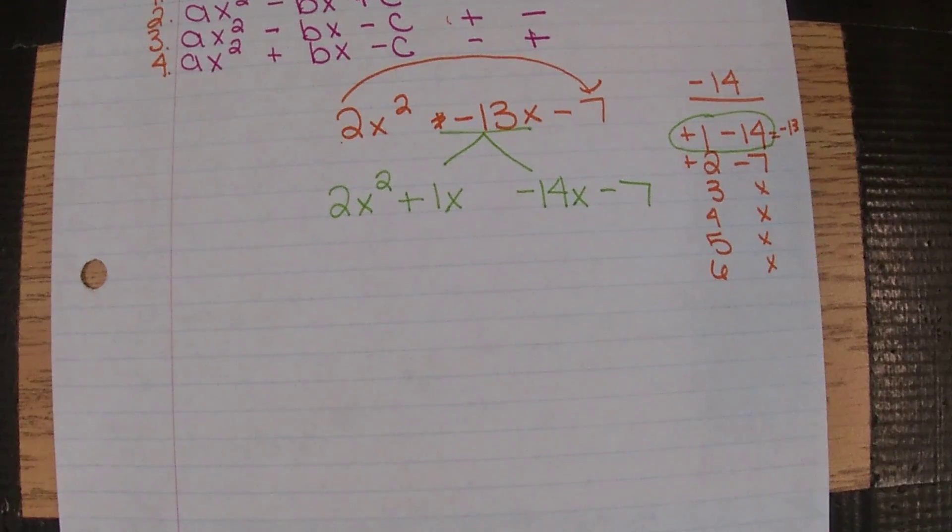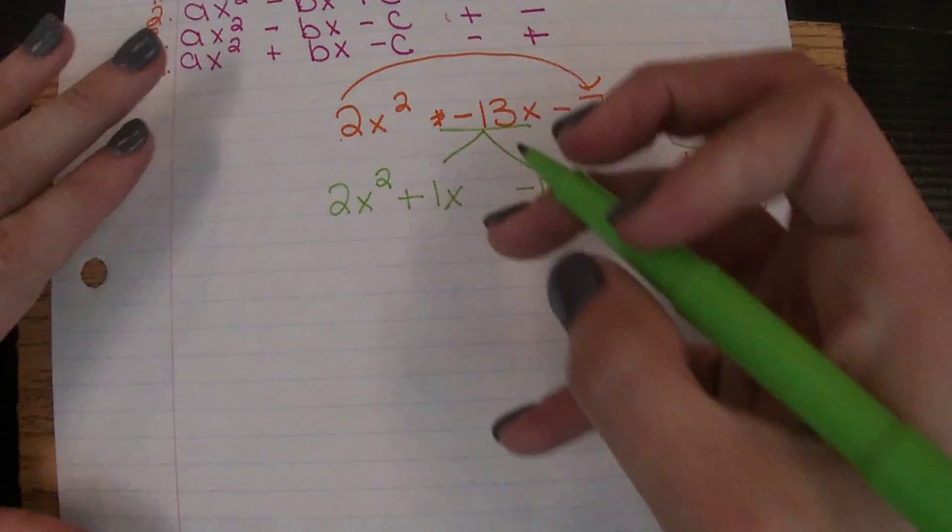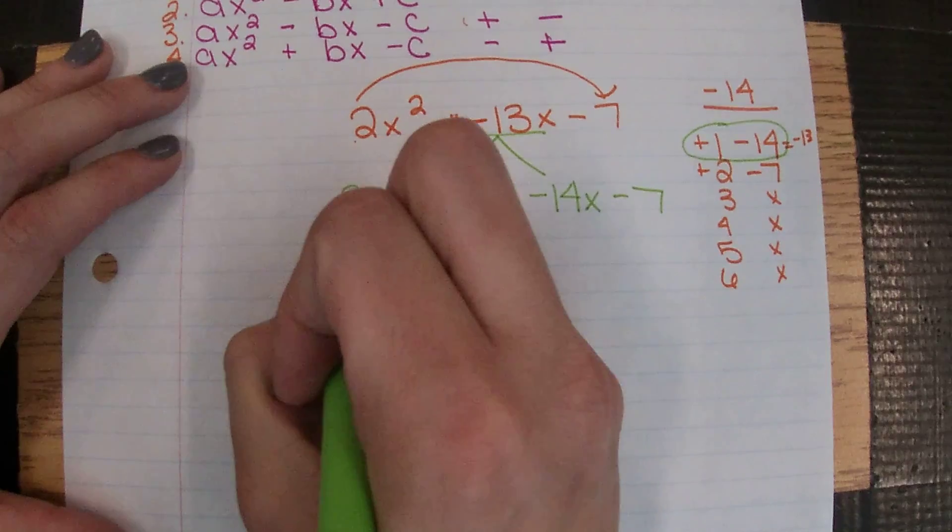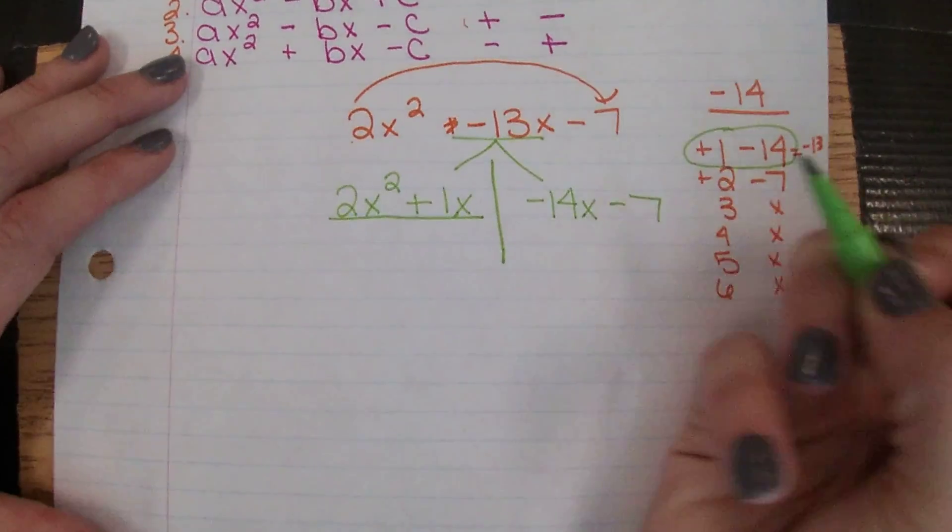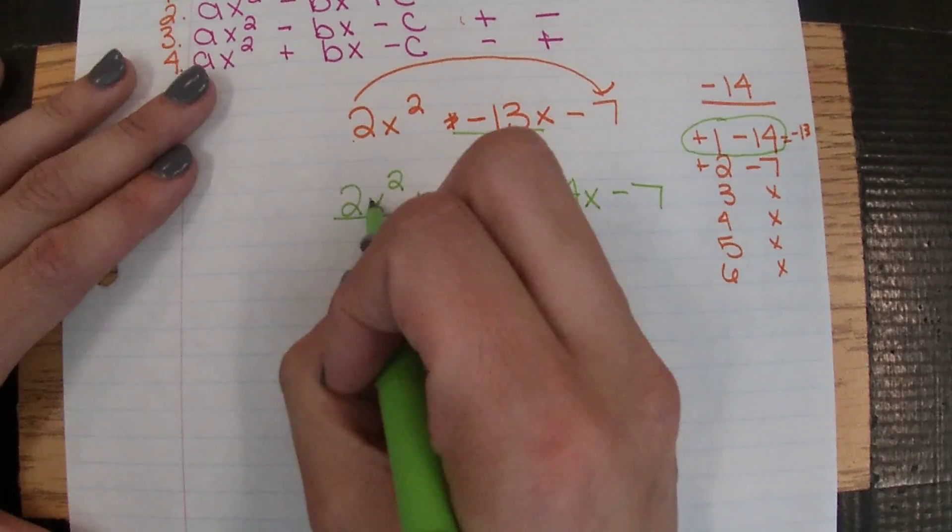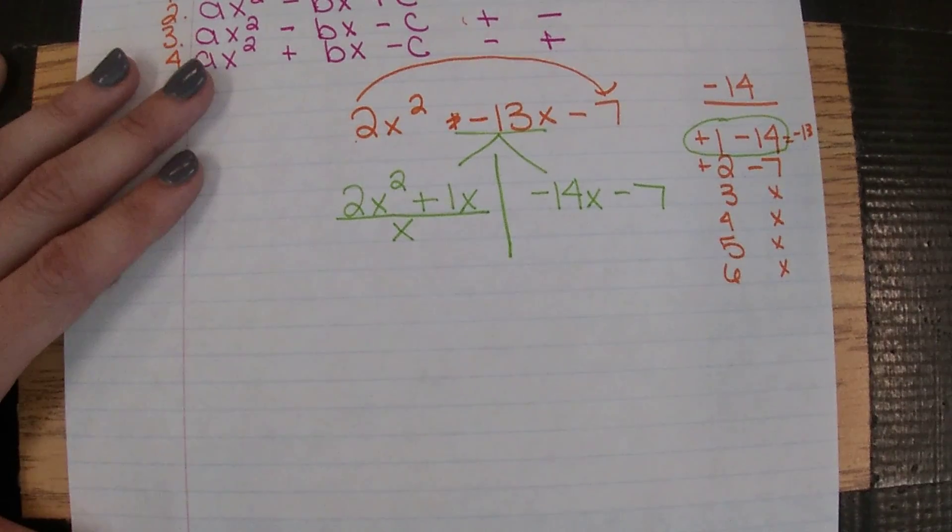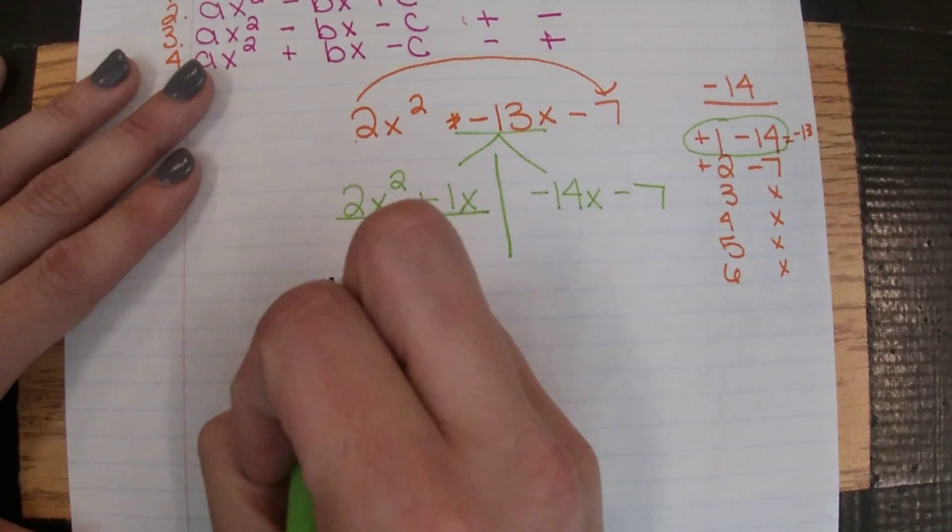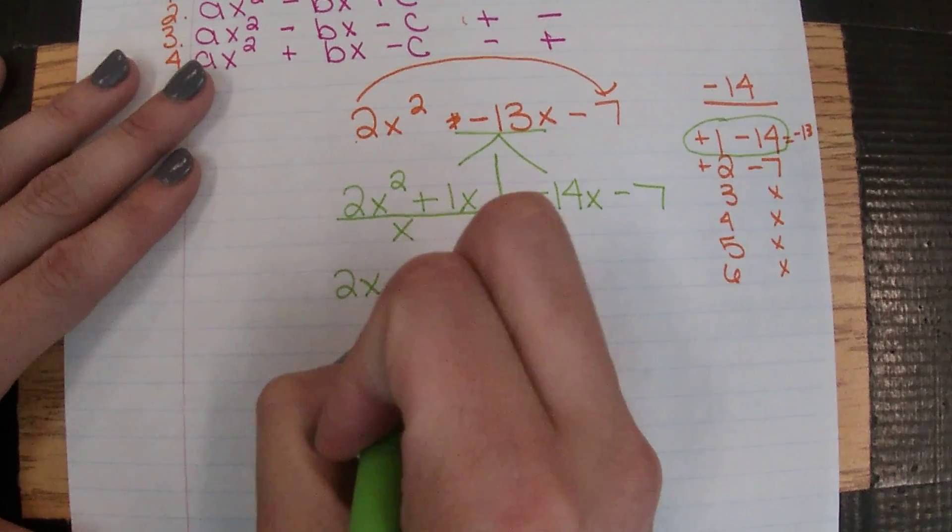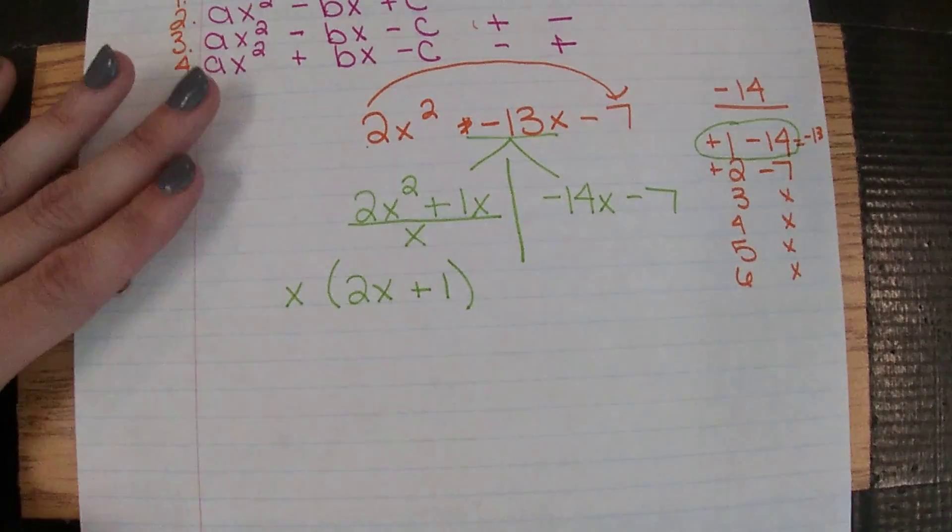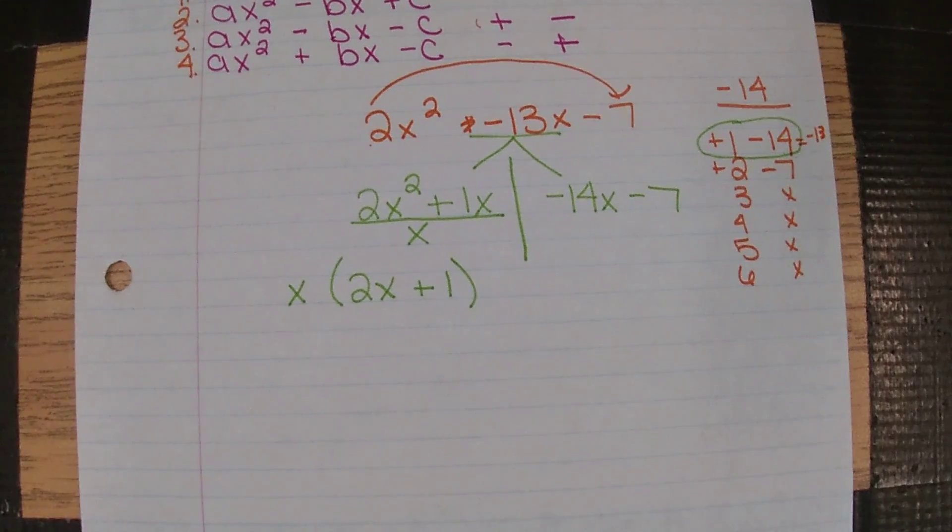And then we will start factoring by grouping. So we're going to split this in half. On the left-hand side, 2 and 1 just has a GCF of 1, but they do both have the x. The smaller exponent is 1, so now when I divide, I'll have 2x + 1. If you're struggling with where all these pieces came from, you're going to need to go back and watch how to factor out a GCF.